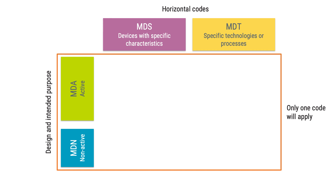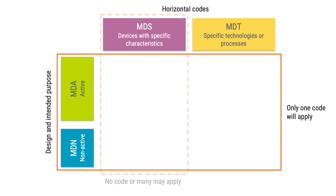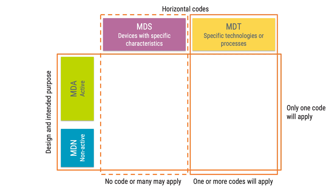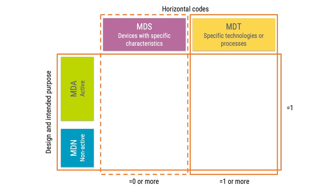When it comes to MDA and MDN codes, the manufacturer and the notified body need to agree on one applicable product code for each device. For the MDS specific characteristics codes, it could be that no code applies, or that several codes apply, depending on the characteristics of the device. For the MDT technology codes, you need to specify at least one code, but there could also be several applicable codes. When a manufacturer applies to a notified body, they need to specify which of these codes applies to each of their devices, so that the notified body can decide if they are designated to work with those devices.